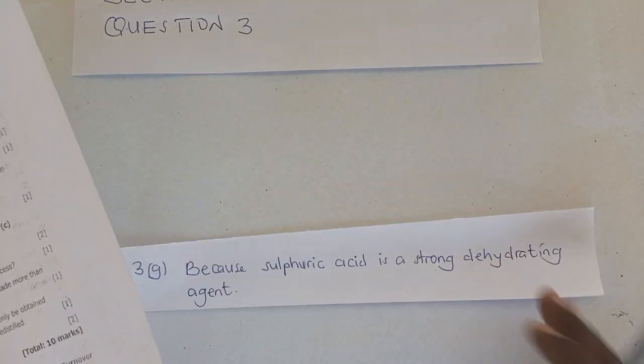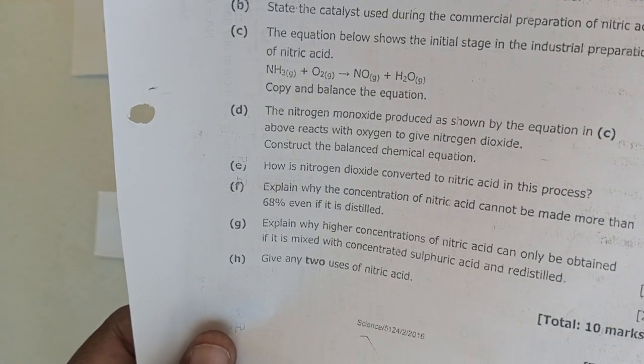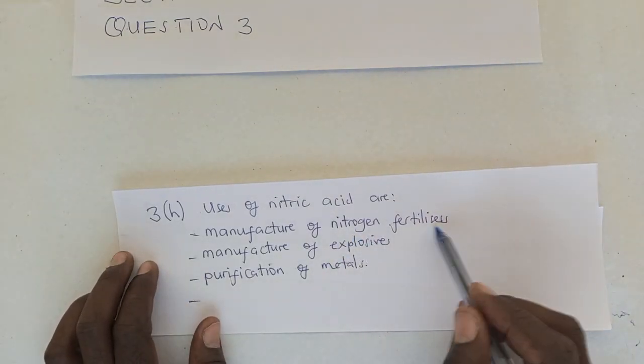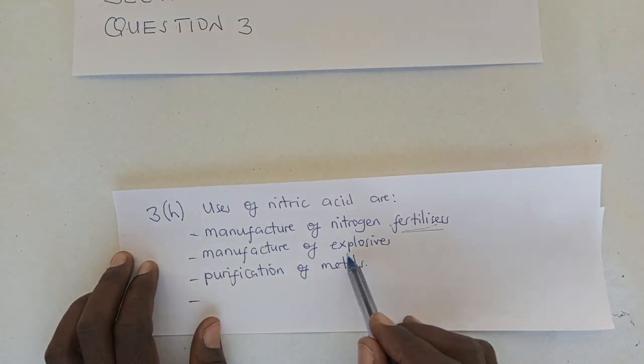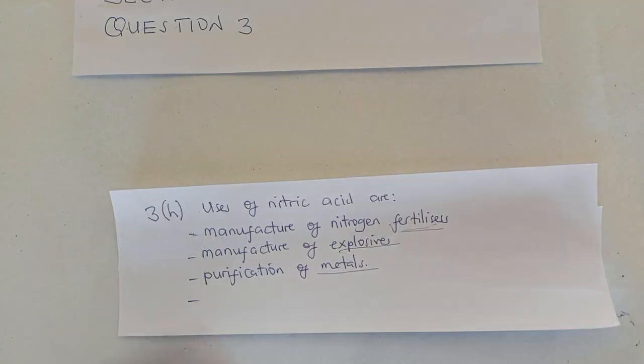Now we move on to the next question, which talks about the uses. Give two uses of nitric acid. And there are so many uses. One of them is that nitric acid is used in the manufacture of fertilizers. Nitric acid is used in the manufacture of explosives, purification of metals, and so many other uses of nitric acid can be cited here. But you can choose any of those. And I hope this video was helpful. Thank you.